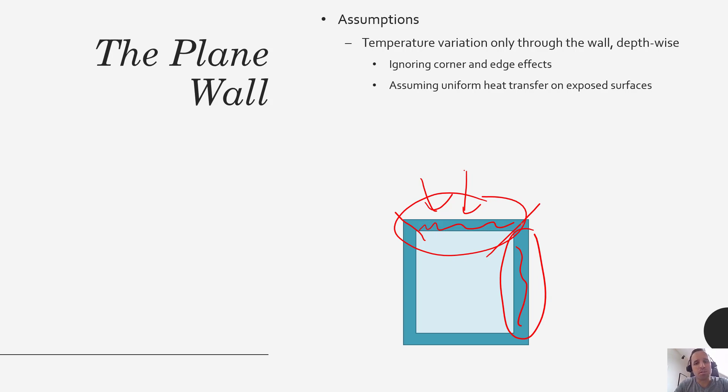It would be exposed to different things and would be made out of different materials. So we could analyze those two as separate things, and then essentially we would be ignoring what's happening here on the corners around the edges.